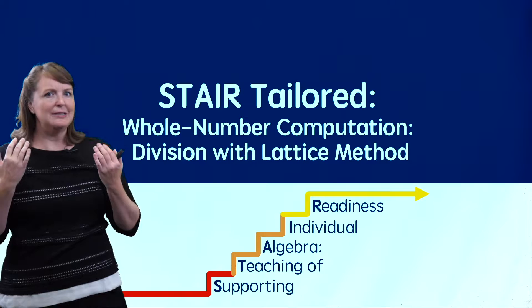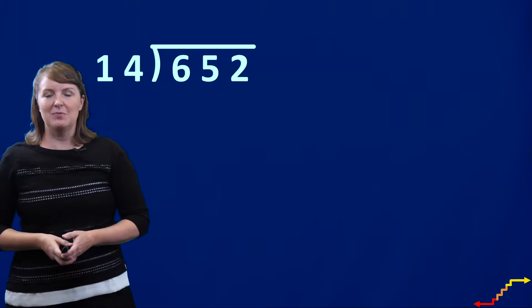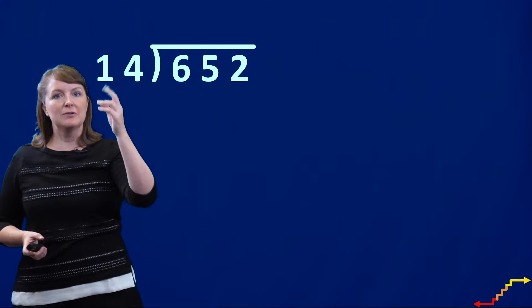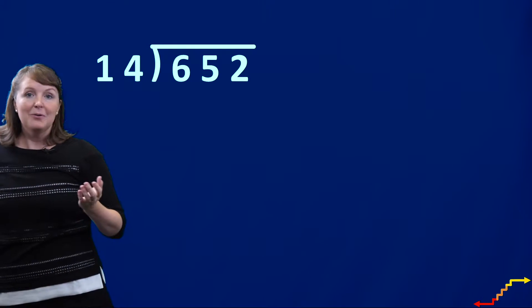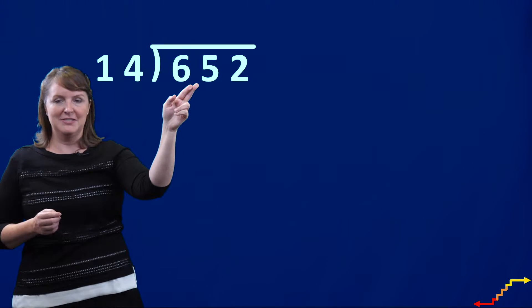We're thinking about how to use the lattice method with division. So here is a division problem: 652 divided by 14. Or we can also think about that as how many groups of 14 can you make when you have 652?